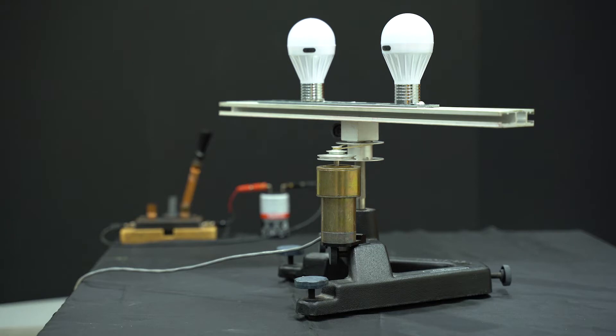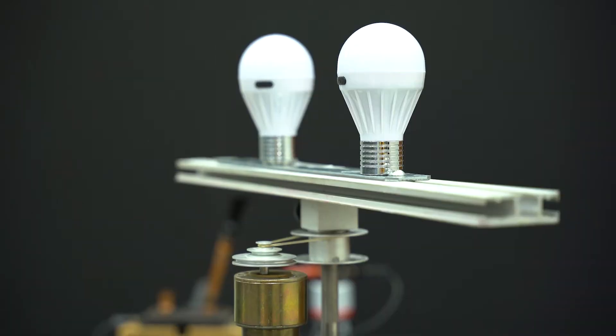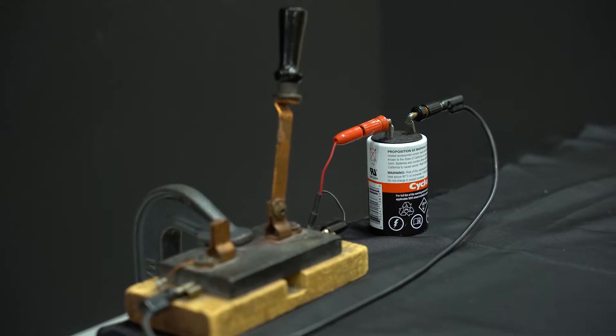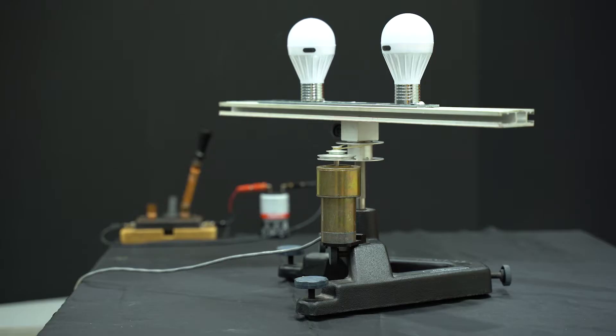We will model the binary star systems with light bulbs placed on a spinning platform powered by a battery. The bulbs have internal batteries and two luminosity settings.